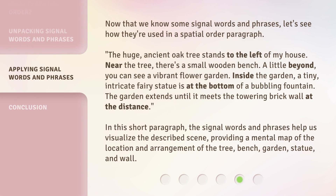Now that we know some signal words and phrases, let's see how they're used in a spatial order paragraph. The huge, ancient oak tree stands to the left of my house. Near the tree, there's a small wooden bench. A little beyond, you can see a vibrant flower garden. Inside the garden, a tiny, intricate fairy statue is at the bottom of a bubbling fountain. The garden extends until it meets the towering brick wall in the distance. In this short paragraph, the signal words and phrases help us visualize the described scene, providing a mental map of the location and arrangement of the tree, bench, garden, statue, and wall.